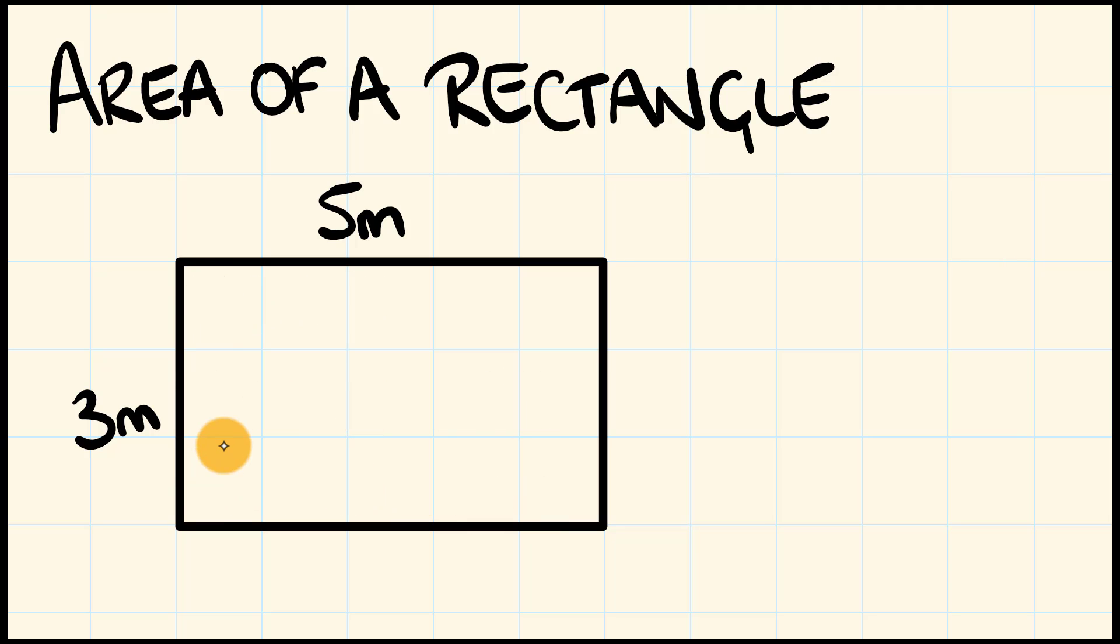So let's have a look at an example, this one right here. Here we have a rectangle with a length of 5 metres and a width of 3 metres. Now we measure area in units such as square metres, where we have 1 metre by 1 metre sides and it gives us an area within that of 1 metre squared.